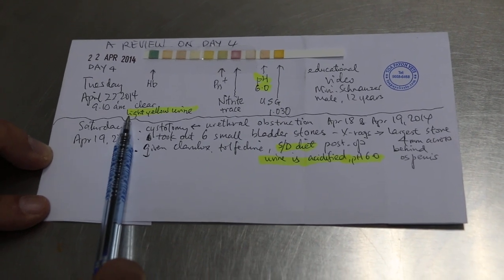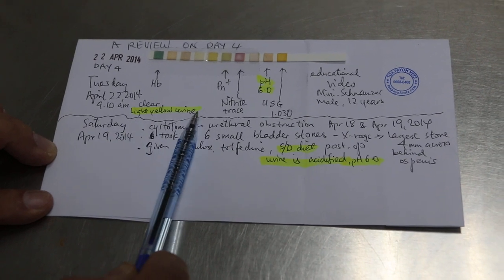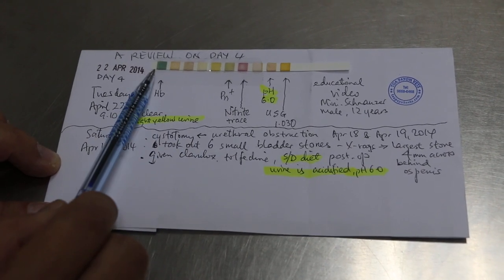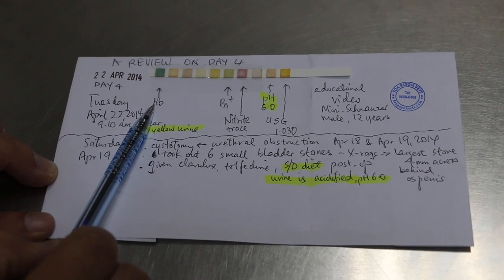And then also, as you can see in the video later, the urine is light yellow colored. Whether it has blood or not, we'll check using the dipstick. Now the stick shows green, so it does have hemoglobin.